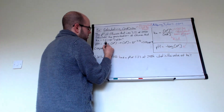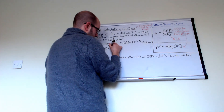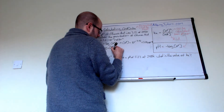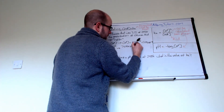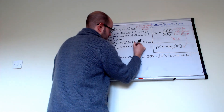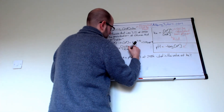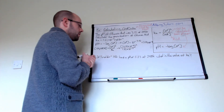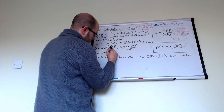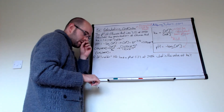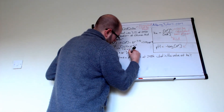The concentration of ethanoic acid, which is CH₃COOH, equals the concentration of H⁺ squared, divided by Ka. Putting our values in: H⁺ is 7.59 × 10⁻⁴, all squared, divided by Ka which is 1.62 × 10⁻⁵. Putting that in our calculator, we should get a concentration of ethanoic acid of 3.56 × 10⁻² moles per decimetre cubed.